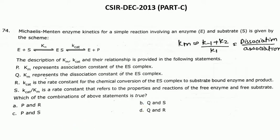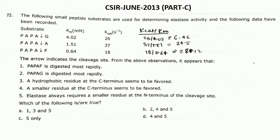The next question involves Kcat/Km. Small substrates are used to determine elastase activity, and the following data have been recorded. You have to calculate the Kcat/Km for each substrate: 26 divided by 4.02 gives 6.46; 37 divided by 1.5 gives 24.5; and Kcat 18 divided by 0.64 gives 28.12.